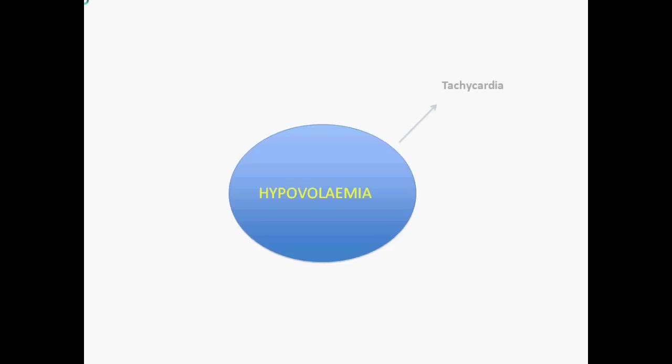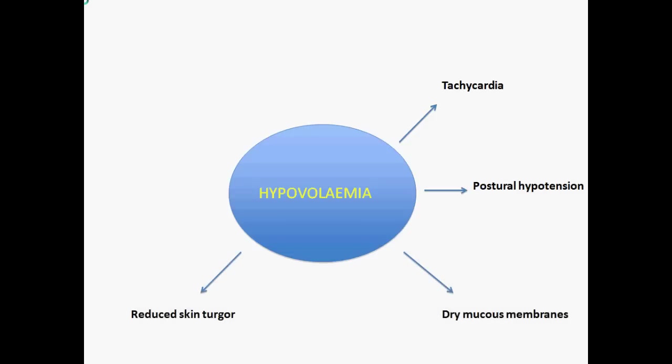Starting with hypovolemia, we want to pick up the clinical signs on examination. You start with an inspection, beginning at the hands and moving up in a systematic fashion. Is the pulse rate high? Is there a big difference between the lying and standing blood pressures? Is there any evidence of dry mucous membranes, or any evidence of reduced tissue turgor? This is tested by gently pinching the skin on the chest and seeing if the skin bounces back quickly or slowly. With reduced skin turgor, it will bounce back slower.